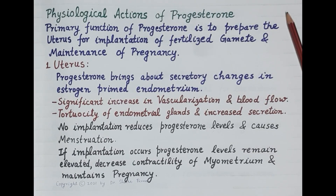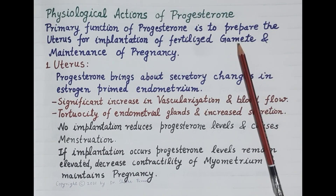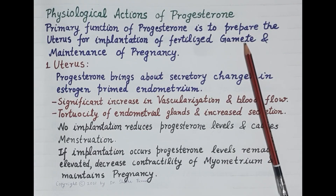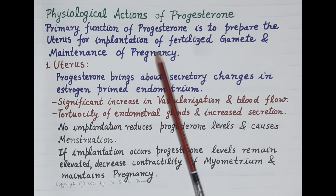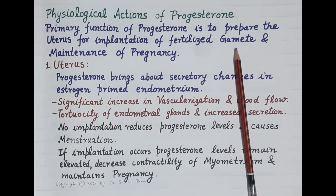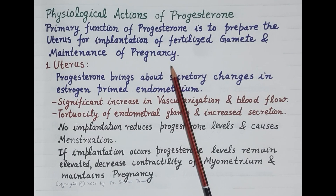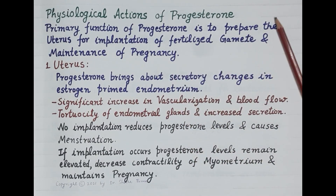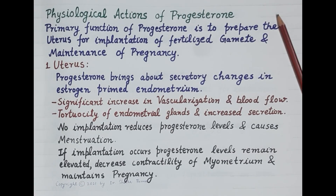Hello students. As we all know, the primary function of progesterone is to prepare the uterus for the implantation of a fertilized egg and for the further maintenance of pregnancy. In today's video, we are going to study the physiological actions of progesterone. To understand these actions, let's briefly review one female reproductive cycle or menstrual cycle.